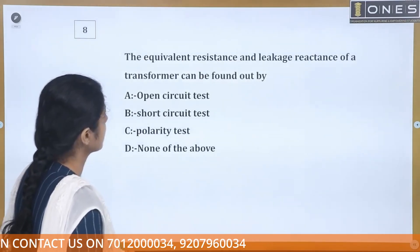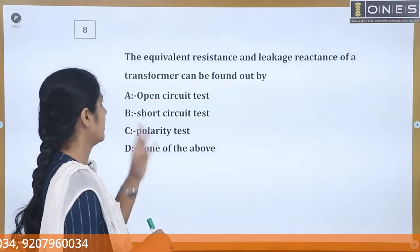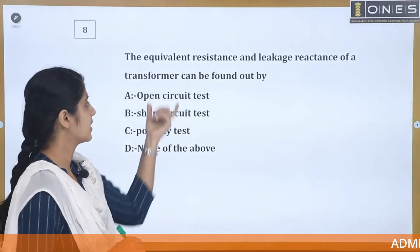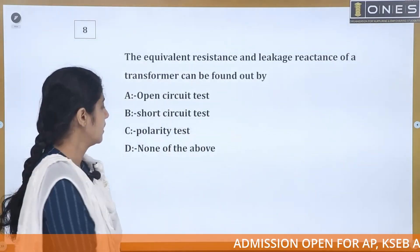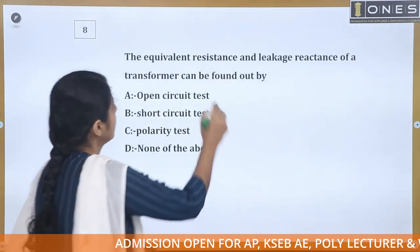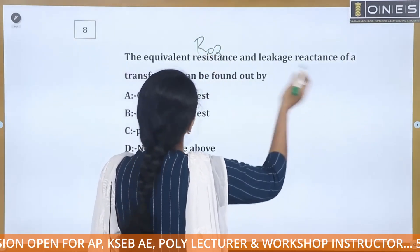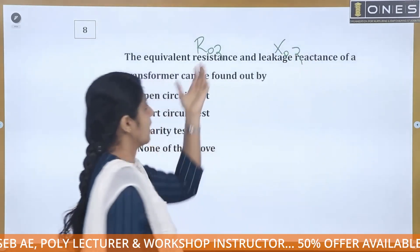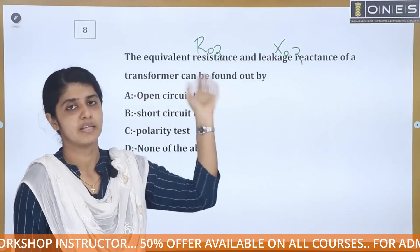The next question: the resistance and leakage reactance of a transformer can be found out by which transformer test? Options are open circuit test, short circuit test, polarity test, or none of the above. The parameters in question are R01, X01, R02, and X02.